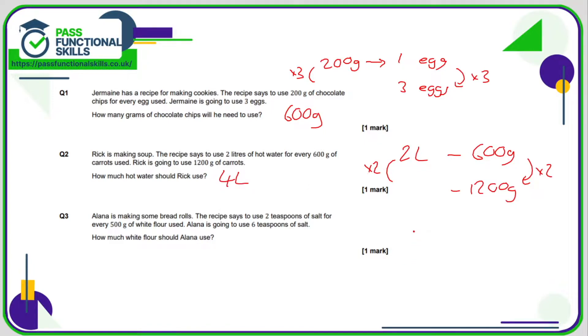For Alana's rolls it's two teaspoons of salt for 500 grams of white flour. If she's using six teaspoons of salt, that is triple the amount of salt, so she's going to need triple the flour. 500 times three is 1500 grams or 1.5 kilos.